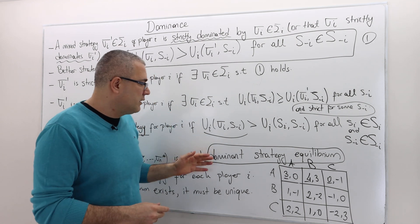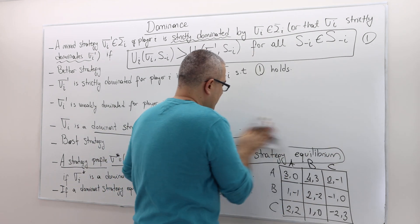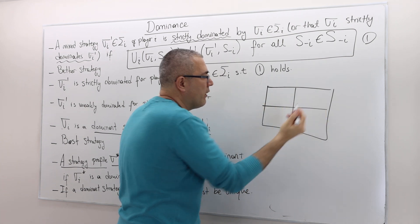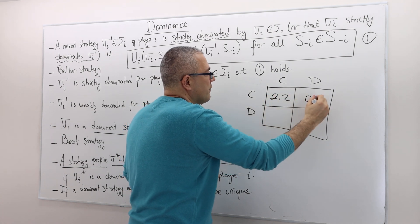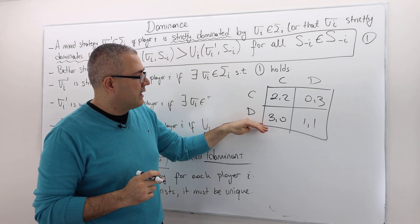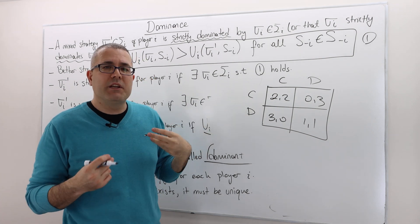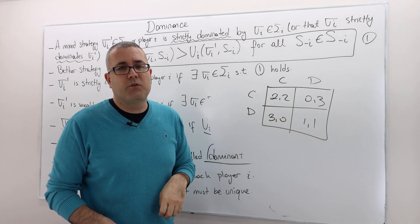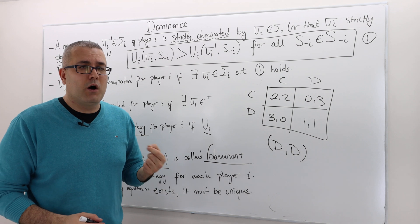One game where the dominant strategy equilibrium does exist is the prisoner's dilemma. Two strategies C and D. The payoff matrix is: CC gives (2,2), CD gives (0,3), DC gives (3,0), DD gives (1,1). D strictly dominates C: 3 > 2 and 1 > 0 for player one. The game is symmetric, so D is also strictly dominant for player two. Therefore DD is the dominant strategy equilibrium.